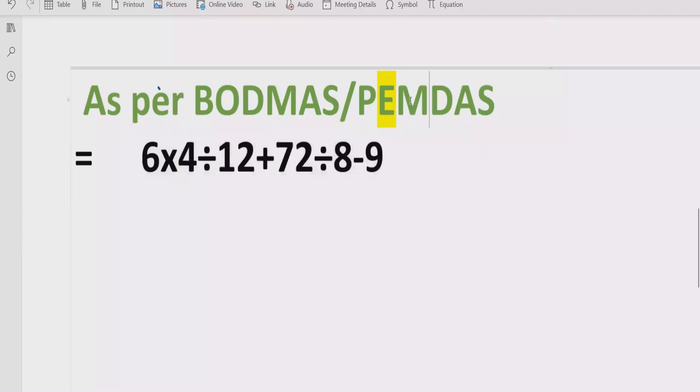So now we will move forward to see the multiplication and division. We will go left to right in our expression and see what is coming first. So here we have the multiplication. First we will multiply this 6x4 = 24 and divide it by 12. We will write other things as is.